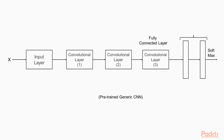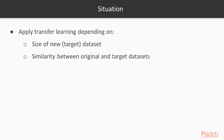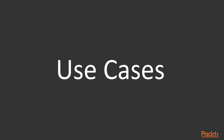Let us consider a pre-trained convolutional neural network, as shown in this diagram. Using this, we can study how the transfer of knowledge can be used in different situations. Transfer learning can be applied depending on the size of the new target dataset and the similarity between the original and target datasets. Let's look at four main use cases.